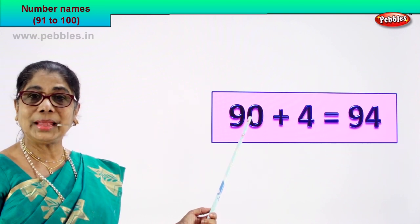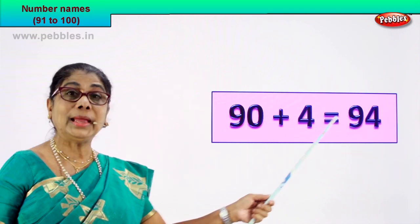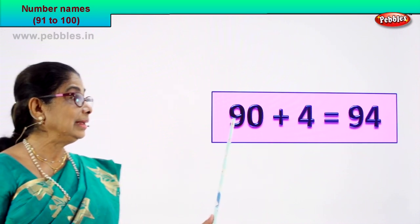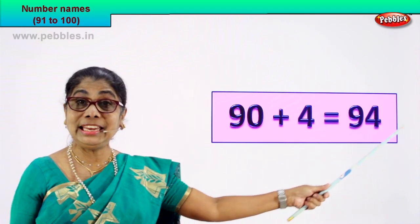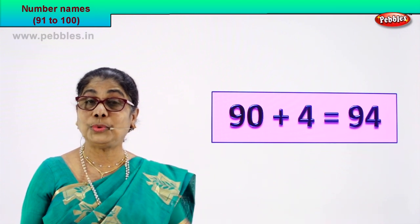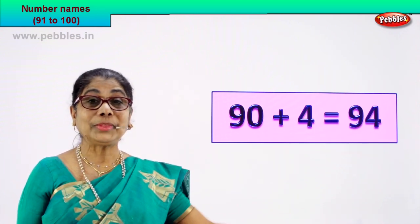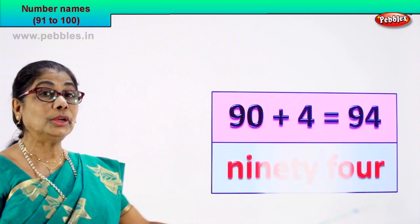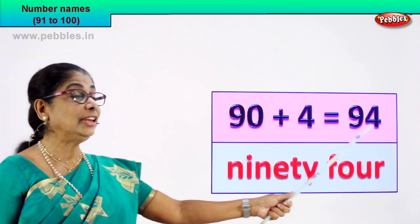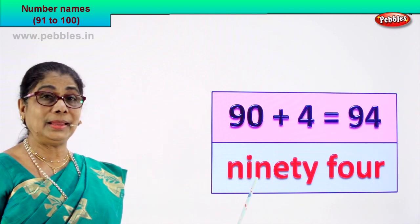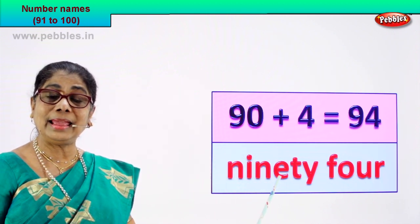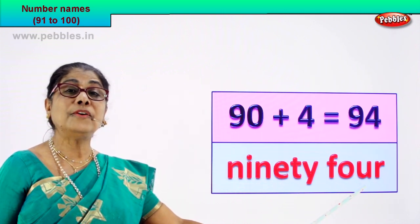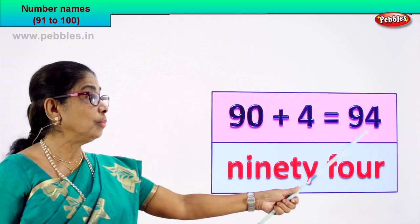Are you enjoying it? Lovely! Let's look at this. Read together: ninety plus four is equal to ninety-four. 9 and 4 — 94. That's the numeral. For this number, ninety-four, you know the spelling of ninety and you know the spelling of four. So writing the name of ninety-four is easy: N-I-N-E-T-Y — ninety — F-O-U-R — four. Ninety-four.